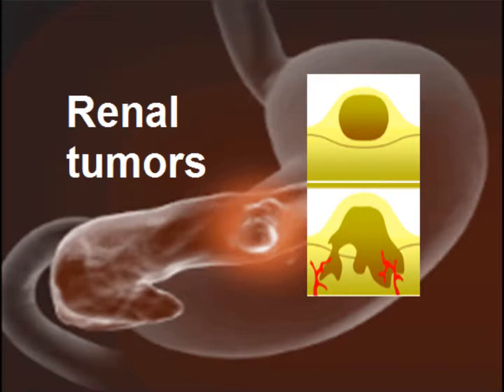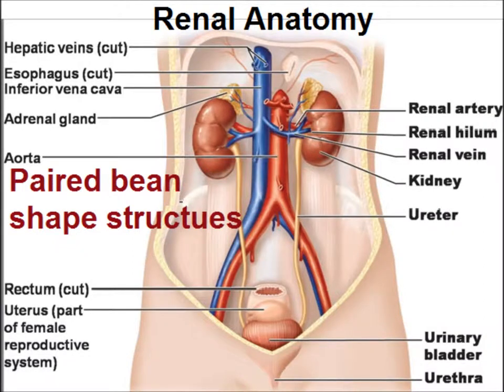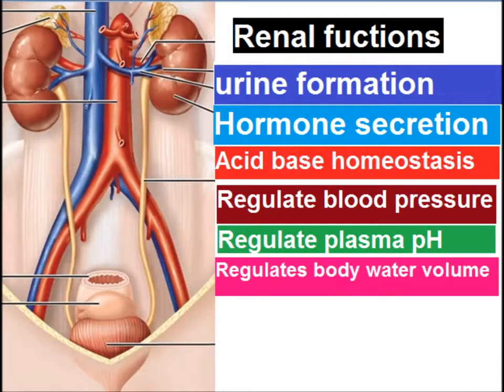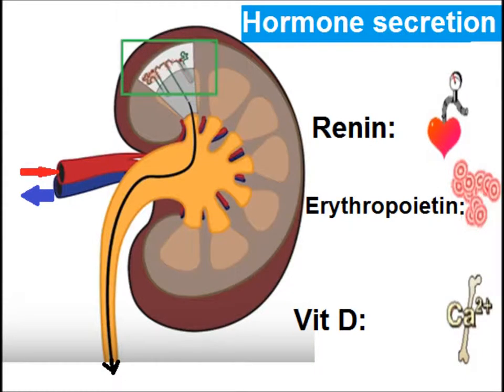Before discussing renal tumors, let's revise renal anatomy. The kidneys are paired bean-shaped structures and their functions include urine formation, hormone secretion, maintenance of acid-base balance, regulation of blood pressure, regulation of plasma pH, and regulation of body water volume. Hormones secreted by the kidneys include renin, erythropoietin, and vitamin D.